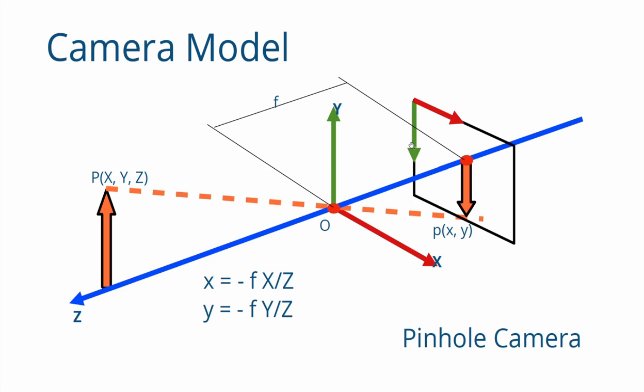The quantity f is known as the focal length of this camera, and the point where the projector intersects the image plane is the image of capital P. Using similar triangles, it is very easy to write that x = -f*X/Z and y = -f*Y/Z. The minus is coming because the image plane is located a distance f from the origin in the negative direction of x.